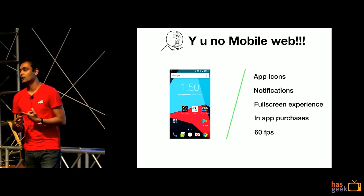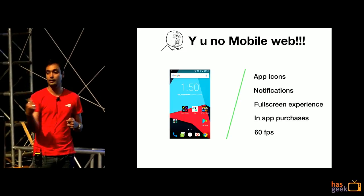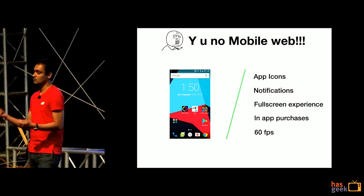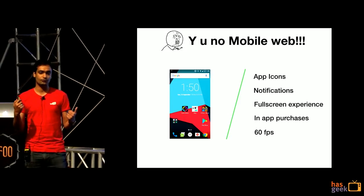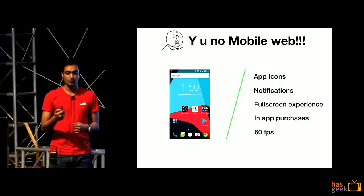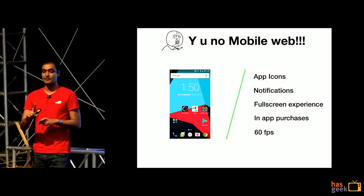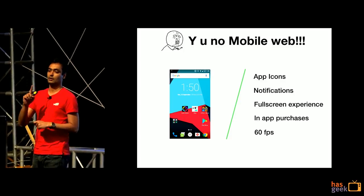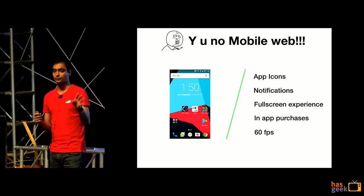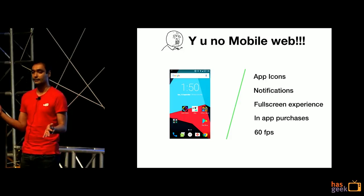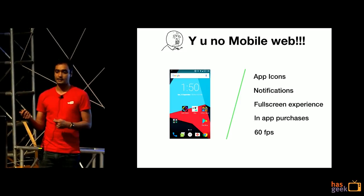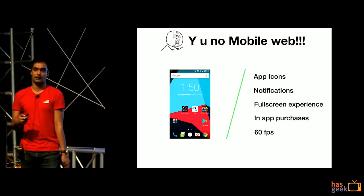App icons: add a manifest and your user will be able to add your game onto their home screen just like any other native app. Notifications: service workers — easy, tons of code samples out there to add push notification capability to your website. Full screen experiences: one single key in your manifest.json and whenever the user opens it from the home screen, it opens in full screen — no browser UI, no notification bar, no native back or home buttons. Next, in-app purchases: the web payments API helps us there. And 60 FPS is what we will talk through for the rest of this talk.